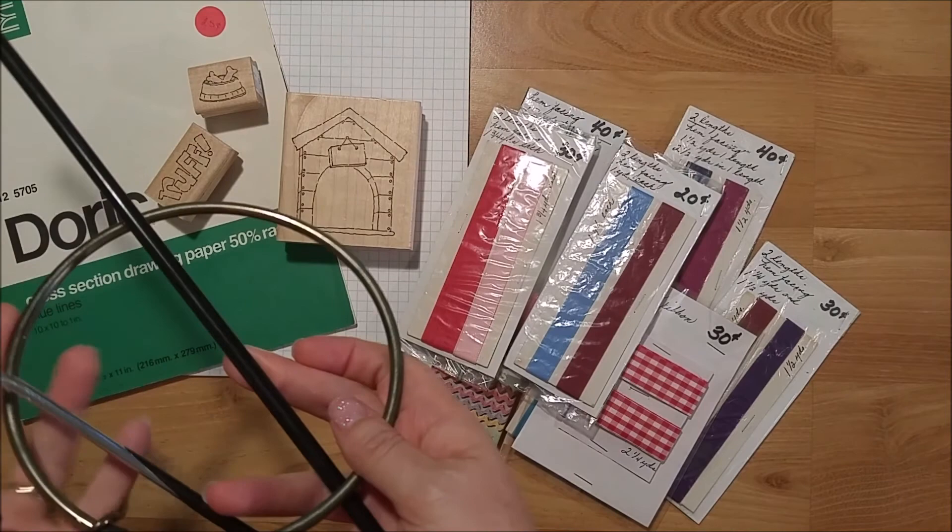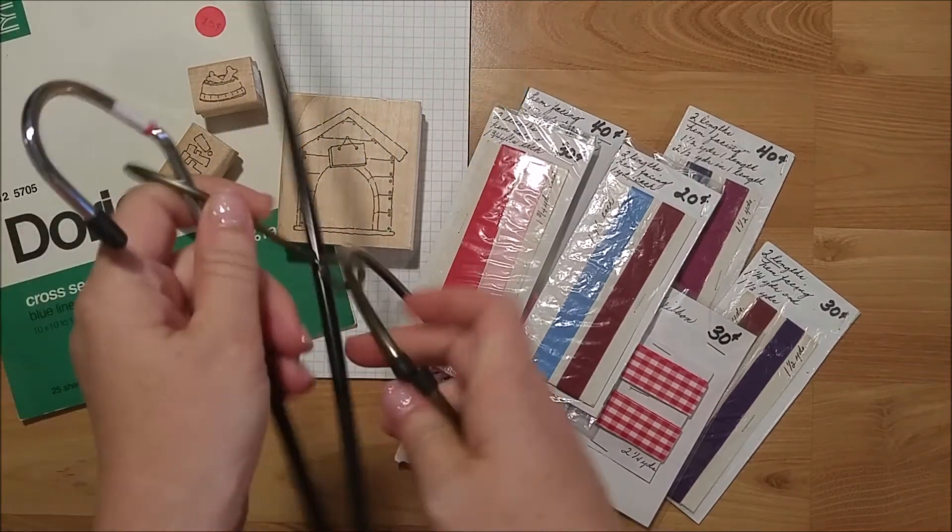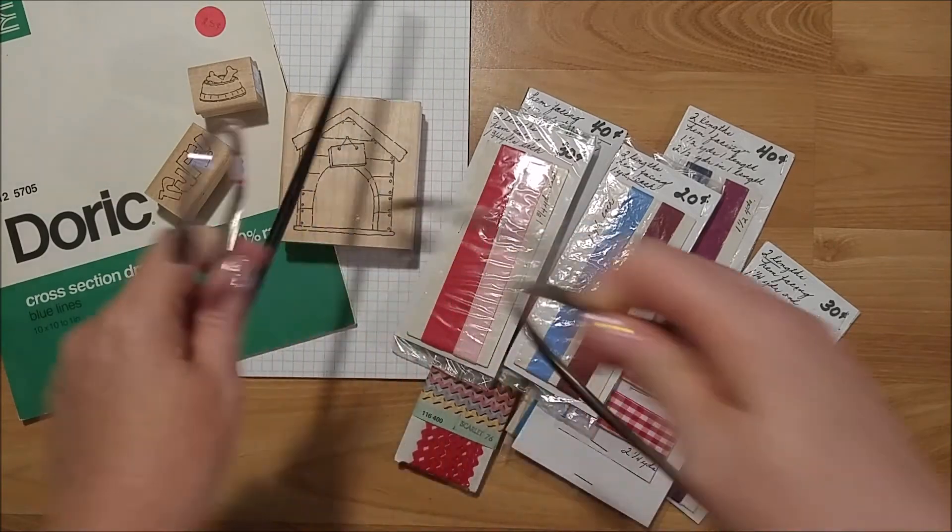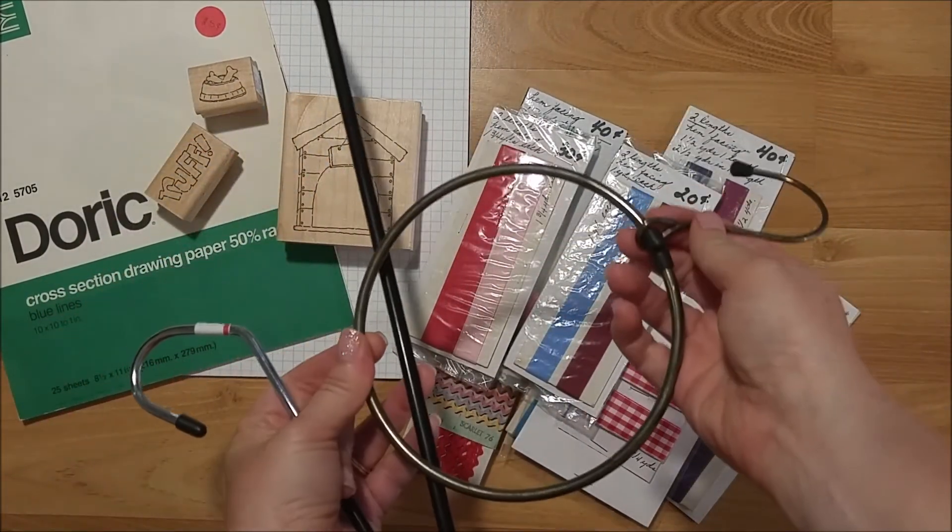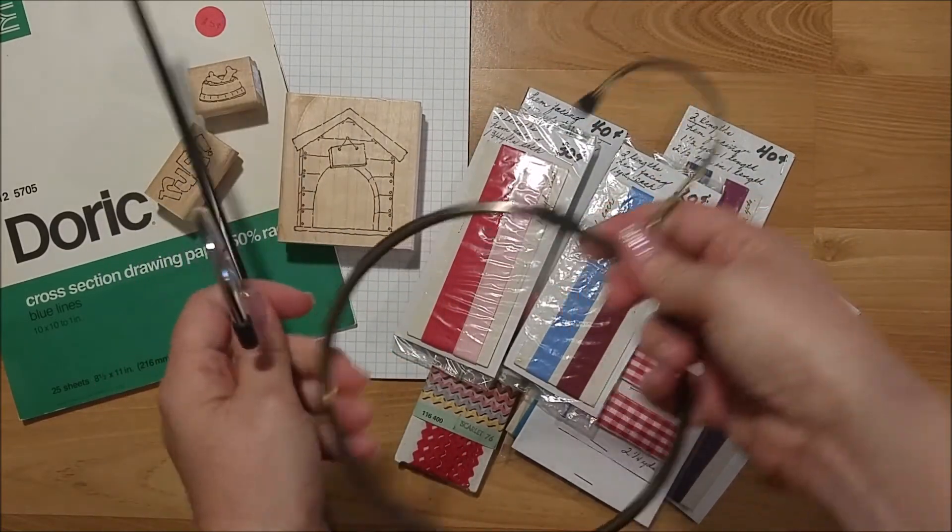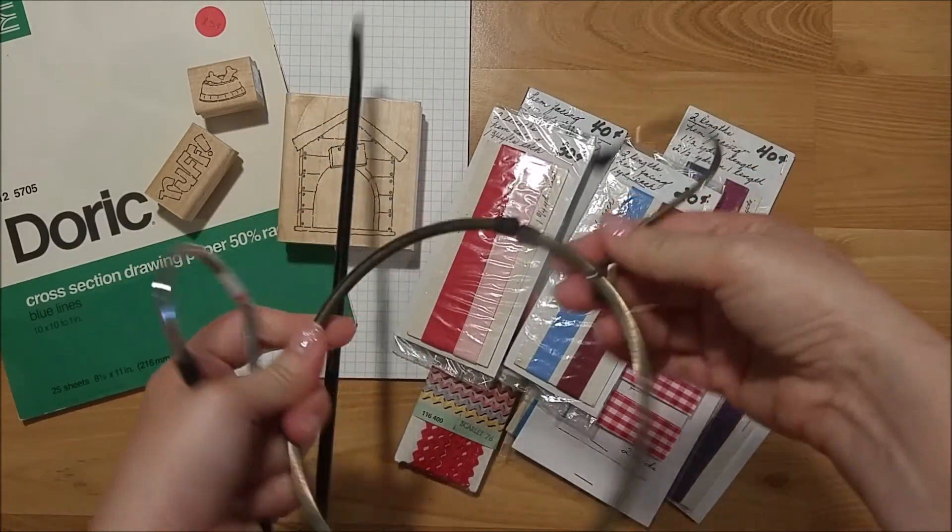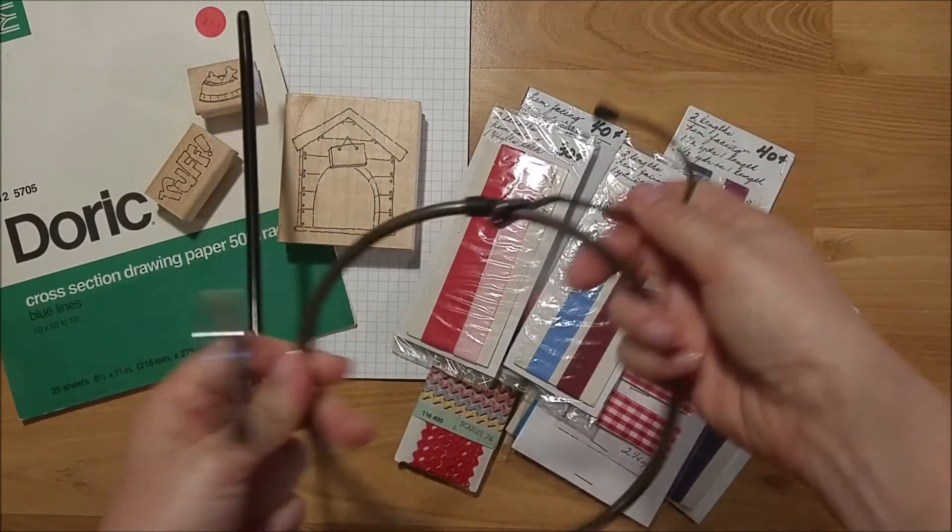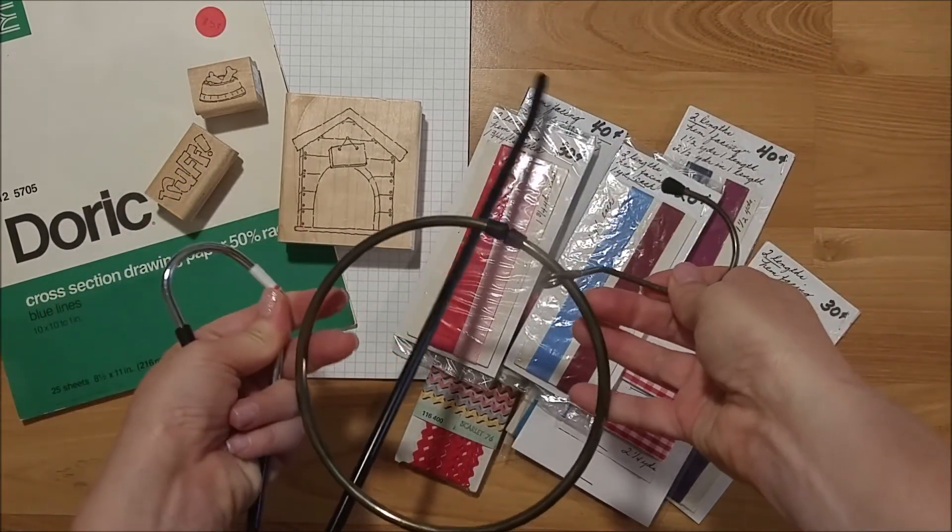The last two things I picked up were these hanger things. I think this is for pants and this one is for ties, but I thought I could hang ribbon spools on here or washi tape rolls or whatever. They were like 30 cents a piece. I could also spray paint them if I wanted to.